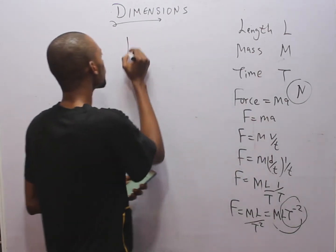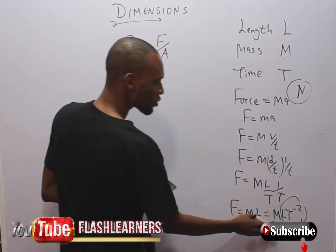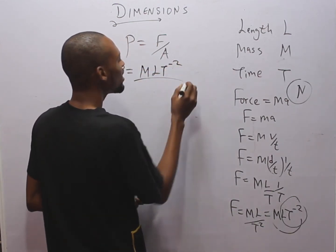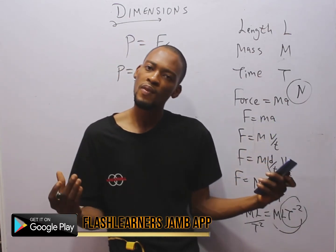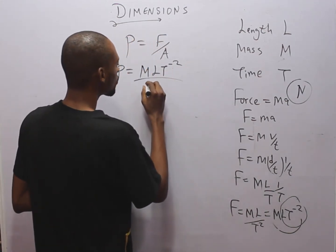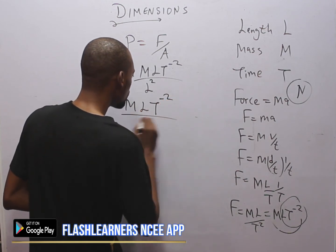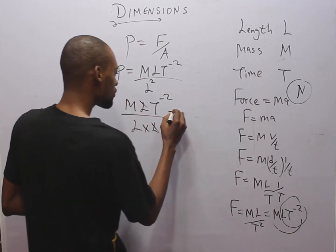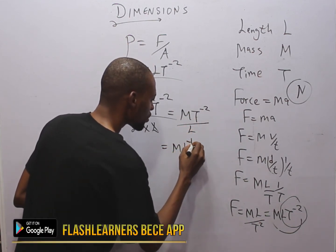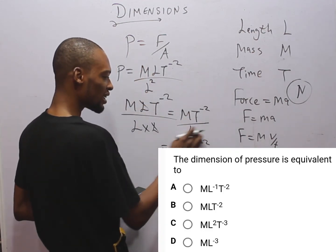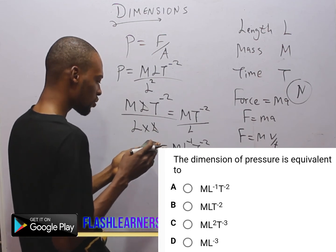The next question asks for the dimension of pressure. Pressure equals force over area. The dimension for force is M·L·T⁻². Area is length times length, so its dimension is L². Therefore pressure equals M·L·T⁻² divided by L², and one L cancels, giving M·L⁻¹·T⁻². So the dimension of pressure is M·L⁻¹·T⁻², which is option A.